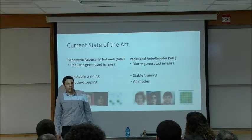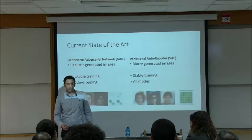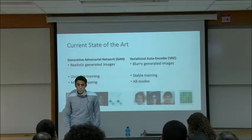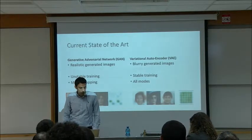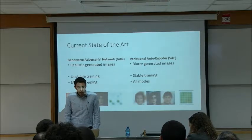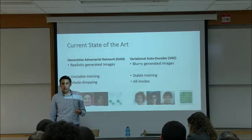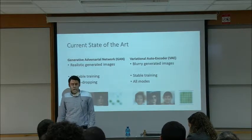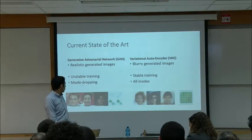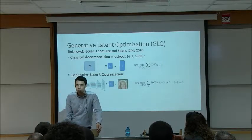The current state of the art in generative image models is held by GANs — generative adversarial networks. GANs generate very realistic-looking images but have major disadvantages: training is quite challenging and they suffer from mode dropping. The most significant non-adversarial method is VAE, which has stable training and no mode dropping, but generates quite blurry images, as can be seen in the comparisons shown.